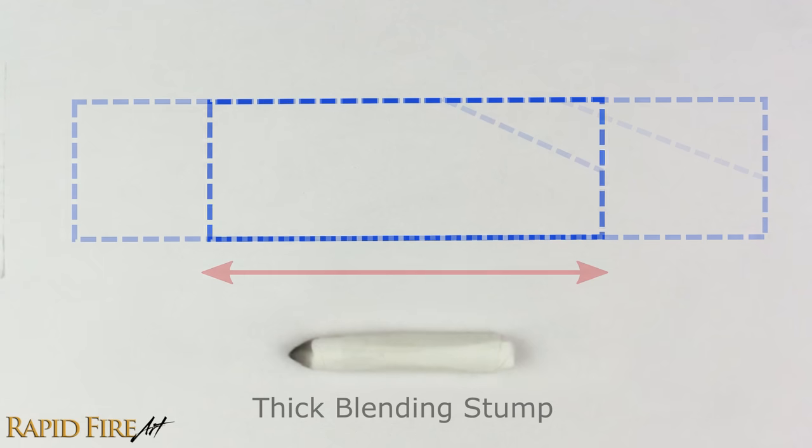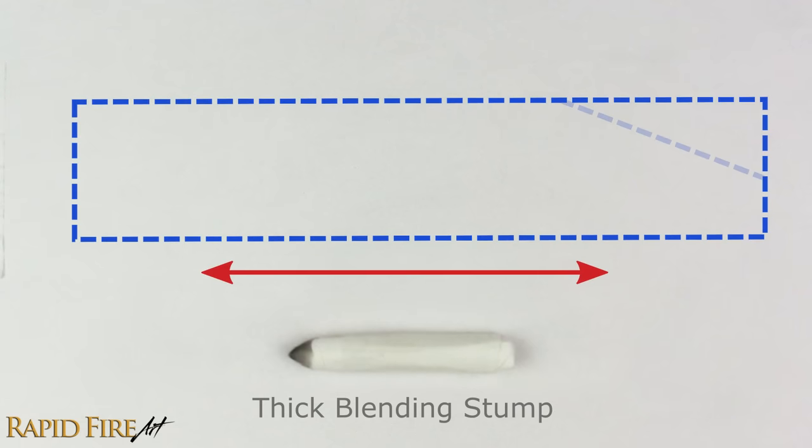To make a thicker blending stump, one that can blend a large area in one single swipe, extend your rectangle this way. If you run out of paper, try taping another piece on the end.